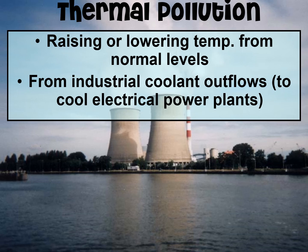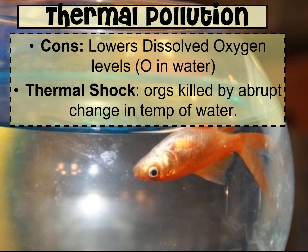Our next category is thermal pollution — when you raise or lower the temperature of the water. This tends to happen from industrial plants located near a waterway; they take in cold water to cool their plants and when they put it back into the water it is warmer than before. This is a problem because it tends to lower dissolved oxygen levels in the water — colder water can hold more oxygen than warmer water. Also, organisms can experience thermal shock: if you change the water temperature very suddenly it can lead to the death of organisms in there.